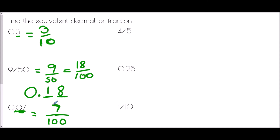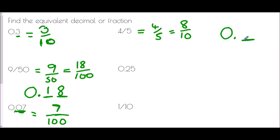For four fifths as a decimal: same problem — not over 10, 100, or 1000. Four over five is the same as 8 over 10. Since it's tenths, the last digit is in the first decimal place, giving 0.8.